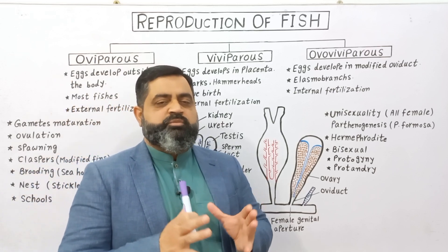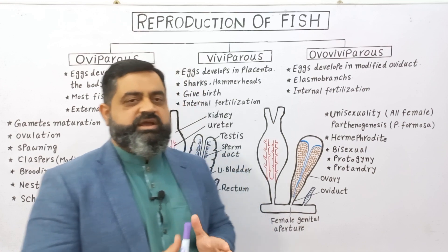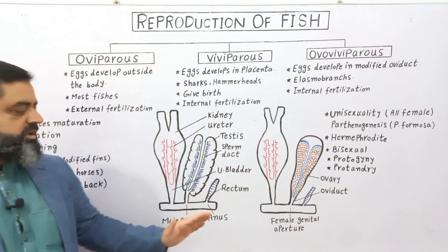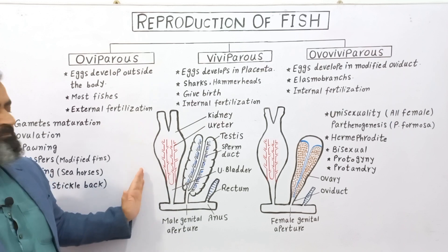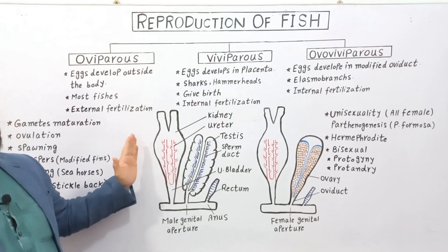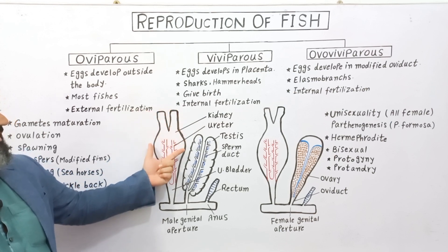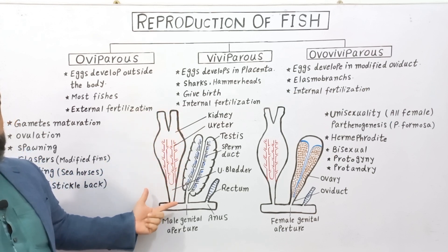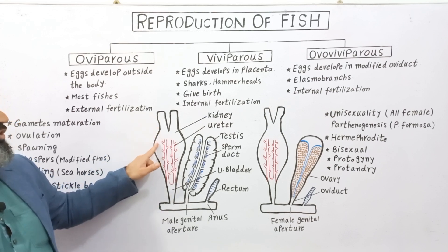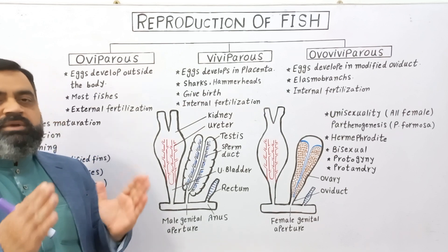Now, to see the reproductive structure, I have taken the example of a bony fish and shown its reproductive organs. Looking at this diagram, these are the reproductive organs of a male bony fish. This is the kidney present inside the abdominal cavity. This is the cap of the kidney and this is the body of the kidney.